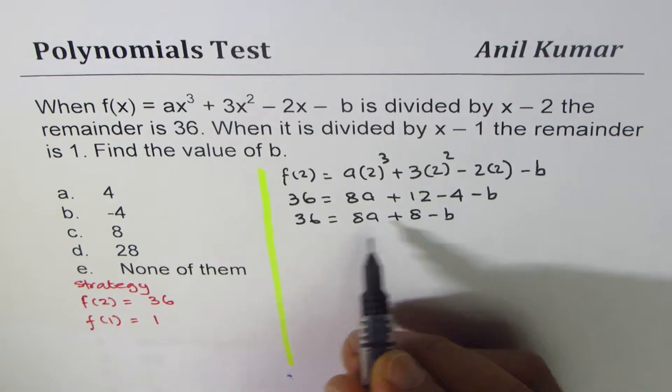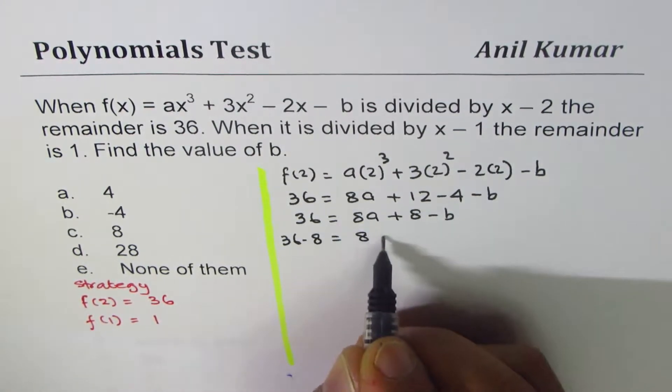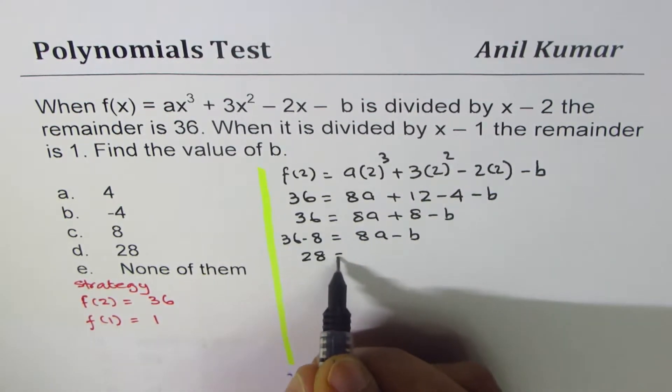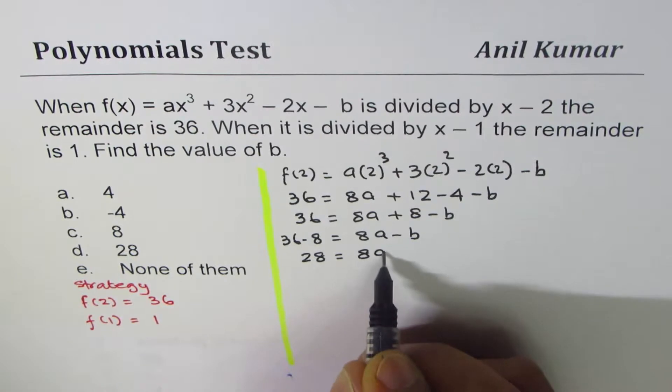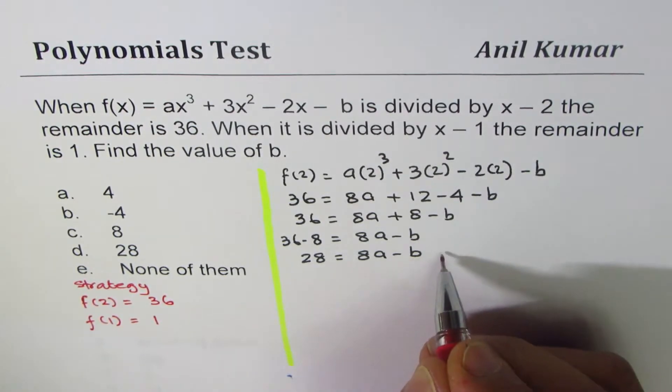It's good to write constants on one side. So we'll write 36 - 8 = 8a - b. And that is 28. So 28 = 8a - b. This is our equation number 1.